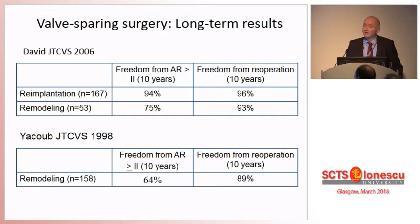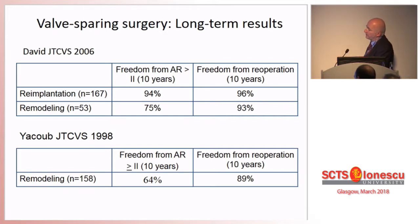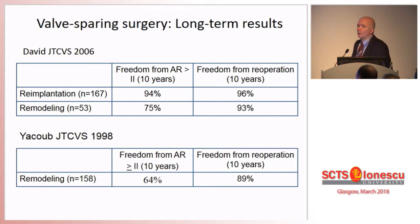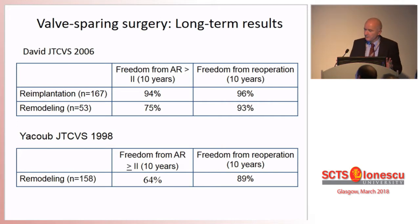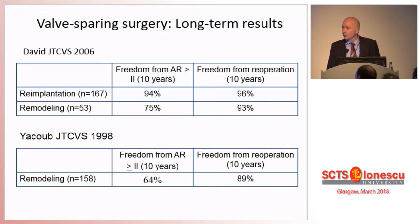If we look at Tyrone David's results — and I had to go into the fine print of the publications — re-implantation showed excellent freedom from re-operation and excellent freedom from AR more than grade two, much better than his own results with remodeling. And Magdi, with all due respect, his results were even worse.